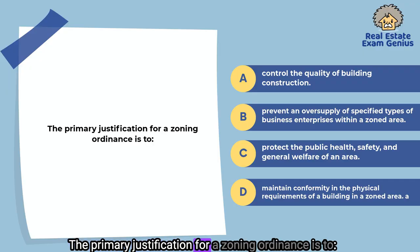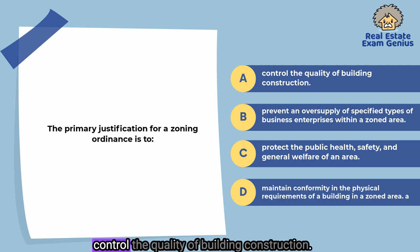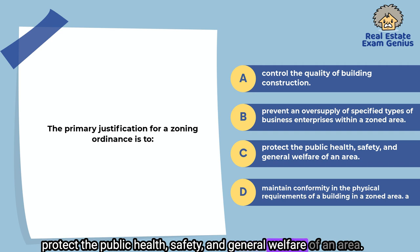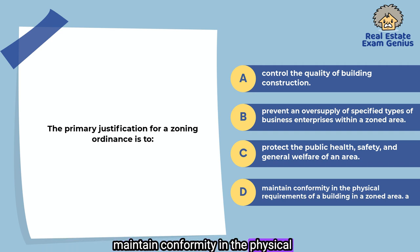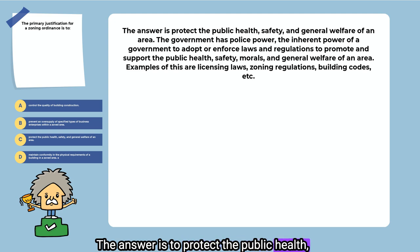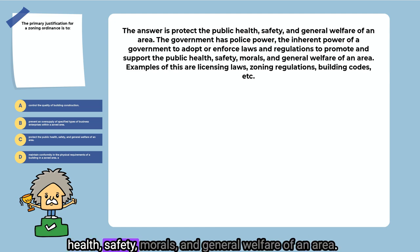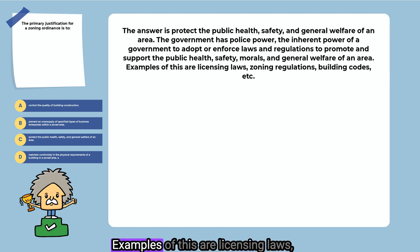The primary justification for a zoning ordinance is to: control the quality of building construction, prevent an oversupply of specified types of business enterprises within a zoned area, protect the public health, safety, and general welfare of an area, or maintain conformity in the physical requirements of a building in a zoned area. The answer is to protect the public health, safety, and general welfare of an area. The government has police power — the inherent power to adopt or enforce laws and regulations to promote and support public health, safety, morals, and general welfare. Examples include licensing laws, zoning regulations, building codes, etc.